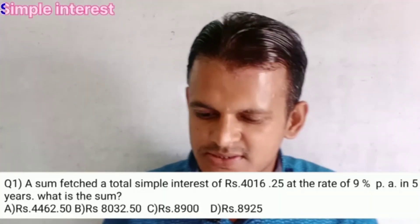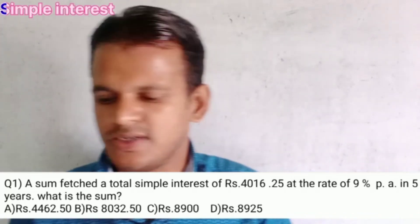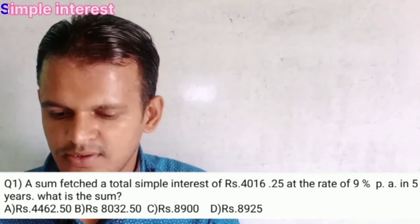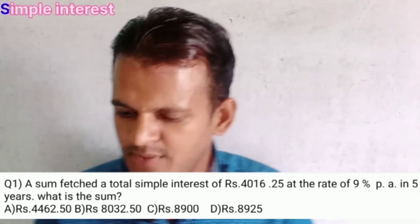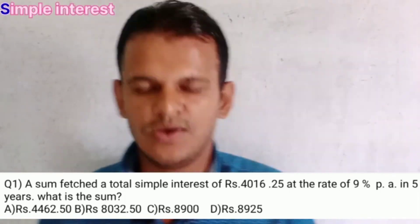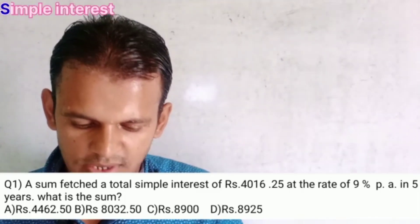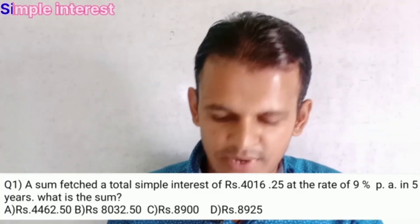The question is: a sum fetched a total simple interest of rupees 4016.25 at the rate of 9% per annum in 5 years. What is the sum? What is the principle? What is the sum means what is the principle?